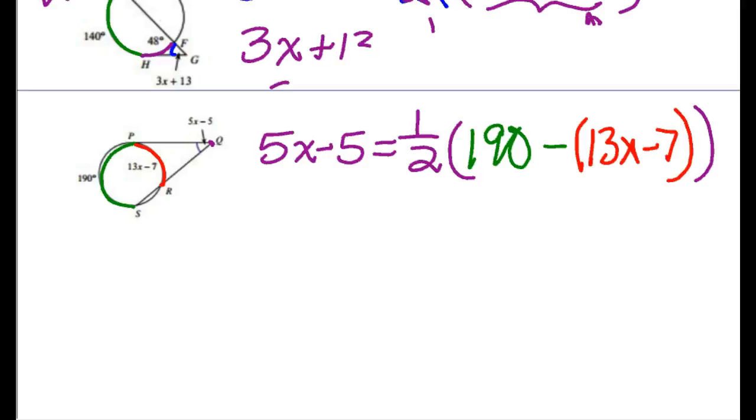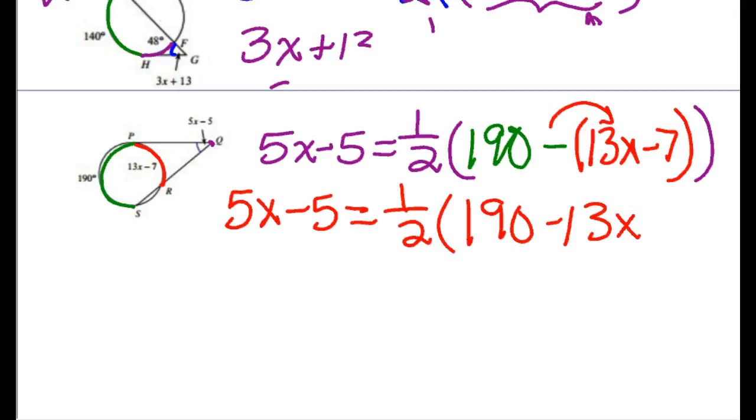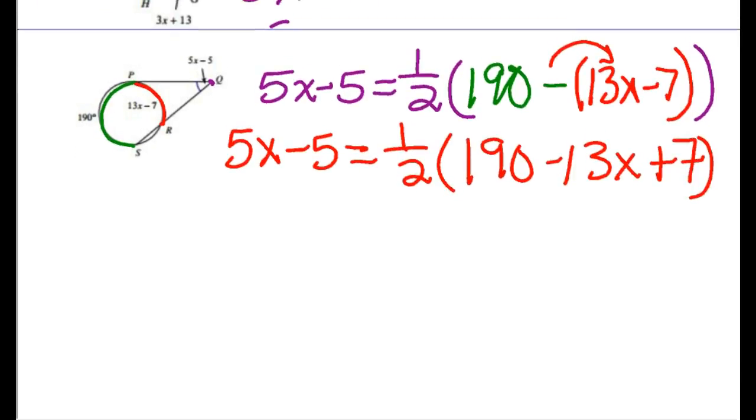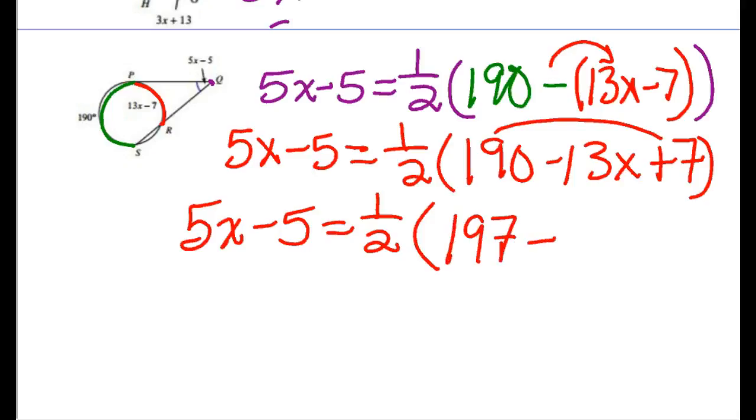I think what I'm going to do is clean up what's in those parentheses. I've got the 190, I'm going to have a minus 13x, and then a plus 7. So I'm just cleaning up inside those parentheses there. Then I am going to do 197 minus 13x.